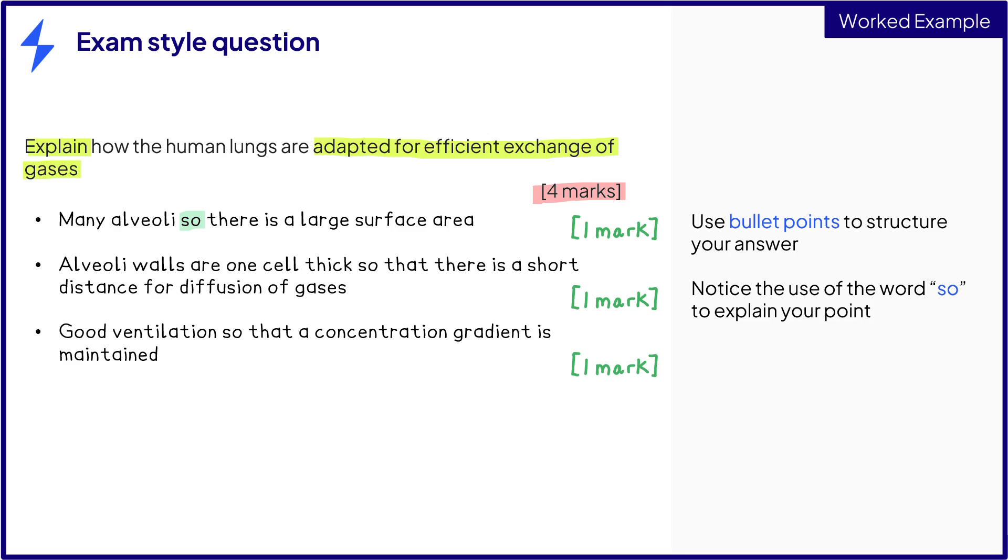Finally, we can mention the good blood supply for our fourth marking point. To explain this, we need to again write that a good blood supply maintains a diffusion concentration gradient. So here we have a nice, clear, logical answer that clearly explains each adaptation.